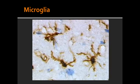Describe what happens to HIV-infected microglia. HIV-infected microglia fuse to one another to form multinucleated giant cells in the CNS.